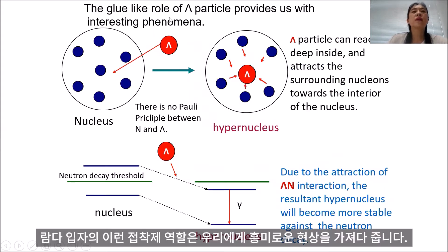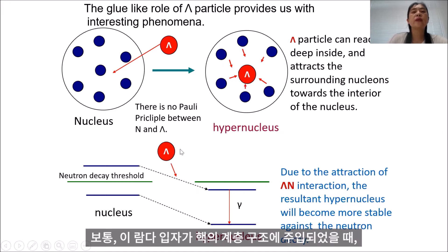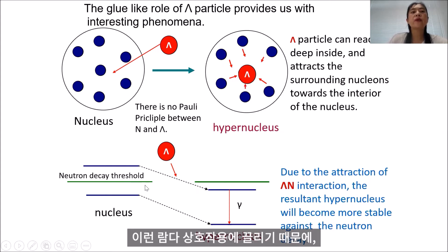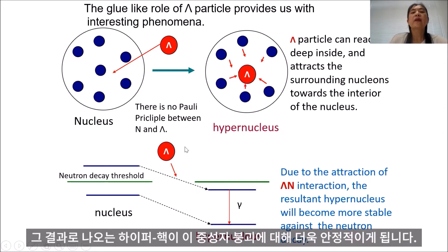This glue-like role of the lambda particle provides interesting phenomena. If this lambda particle is injected into the system, and we assume that the blue line is the level structure of the nucleus and the green line is the neutron decay threshold, then due to the attraction of the lambda interaction, the resultant hypernucleus will become more stable against neutron decay.